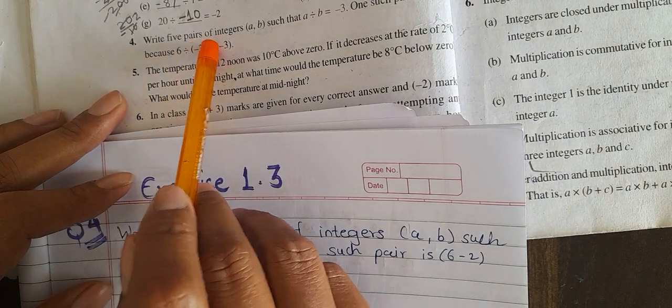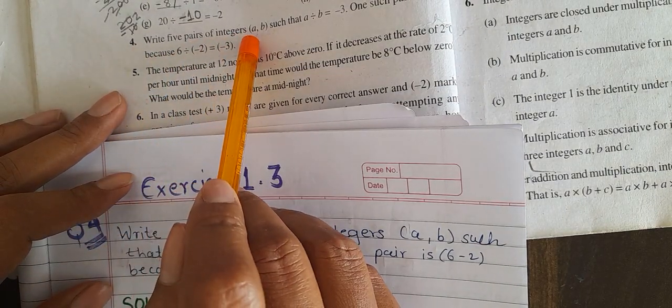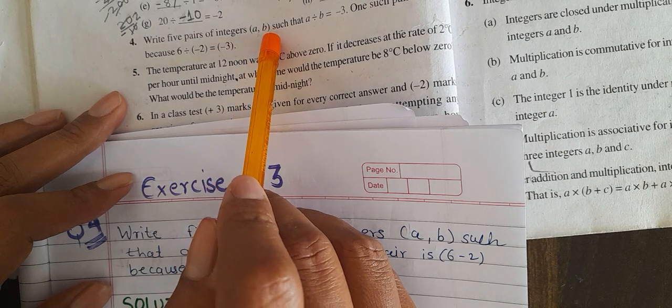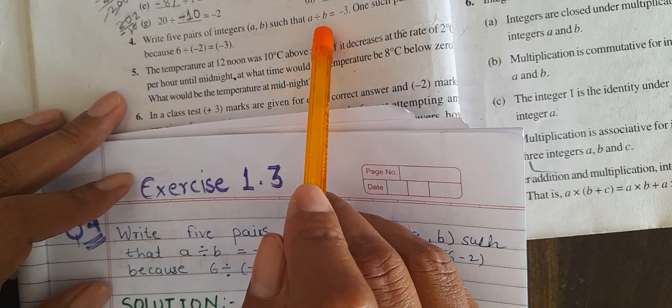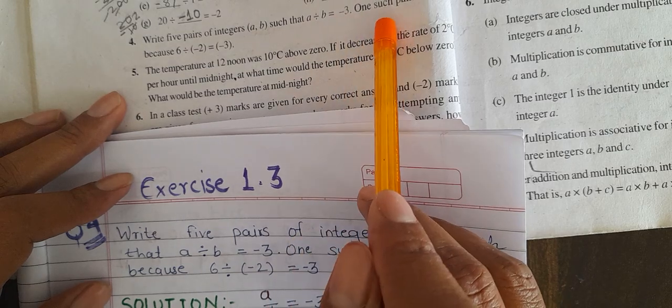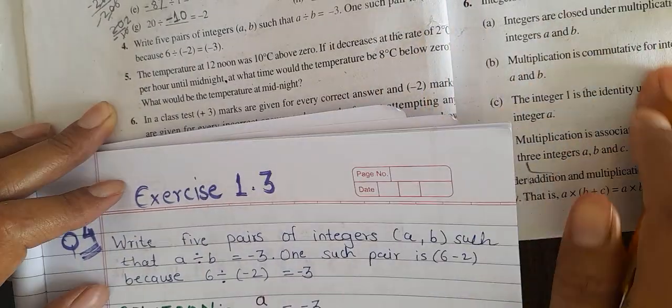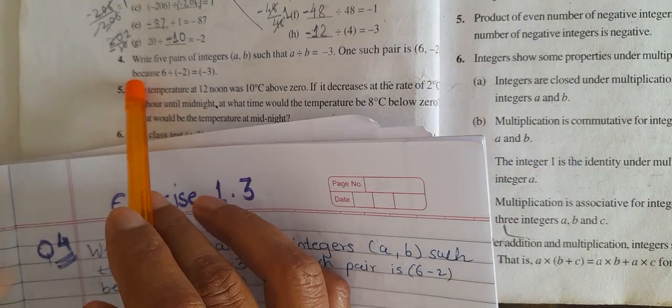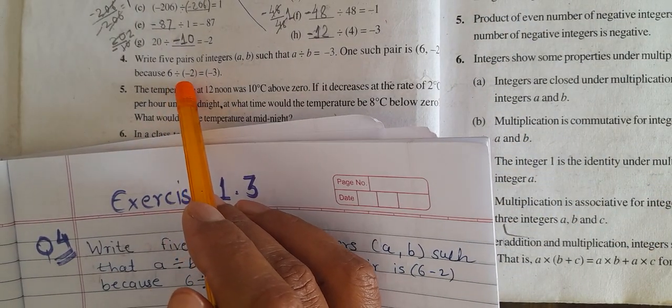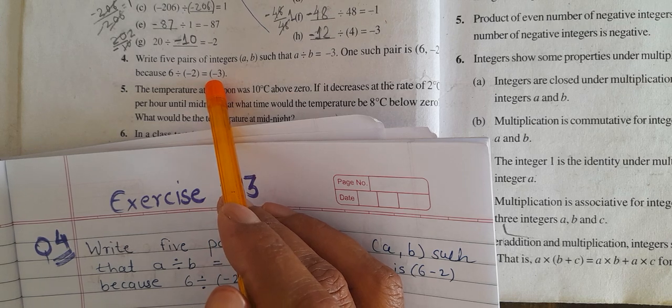Write 5 pairs of integers (A, B) such that A divided by B is equal to minus 3. One such pair is 6, minus 2, because 6 divided by minus 2 is equal to minus 3.